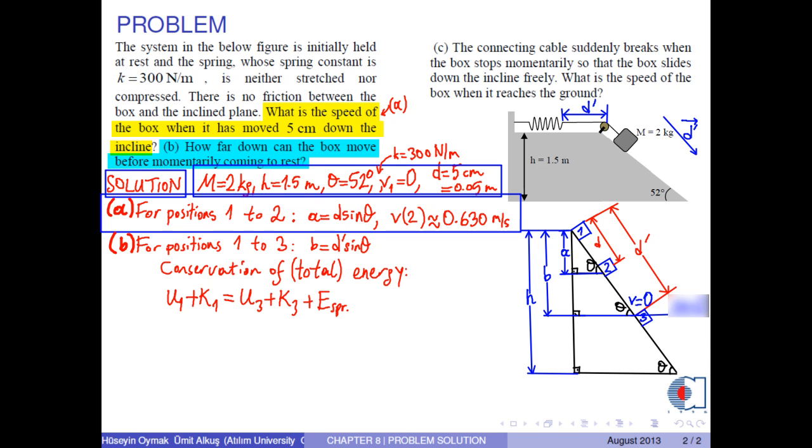It is suitable to choose point 3 as the zero potential energy level. The potential energy of the box, according to this figure, becomes M times G times B. As we discussed in part A, the kinetic and the spring energies of the box at point 1 are zero.